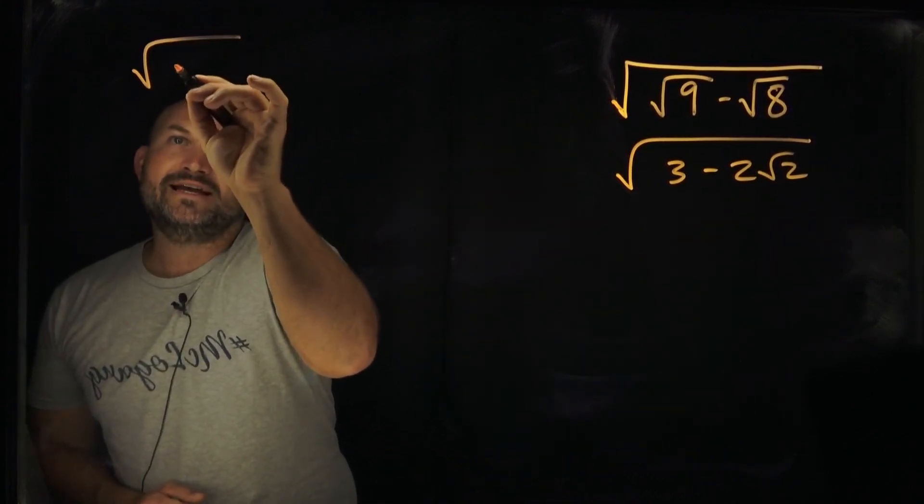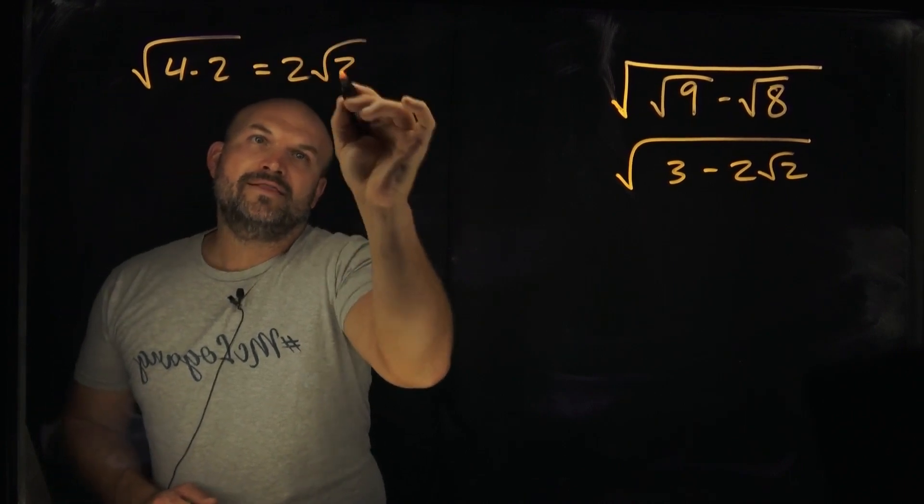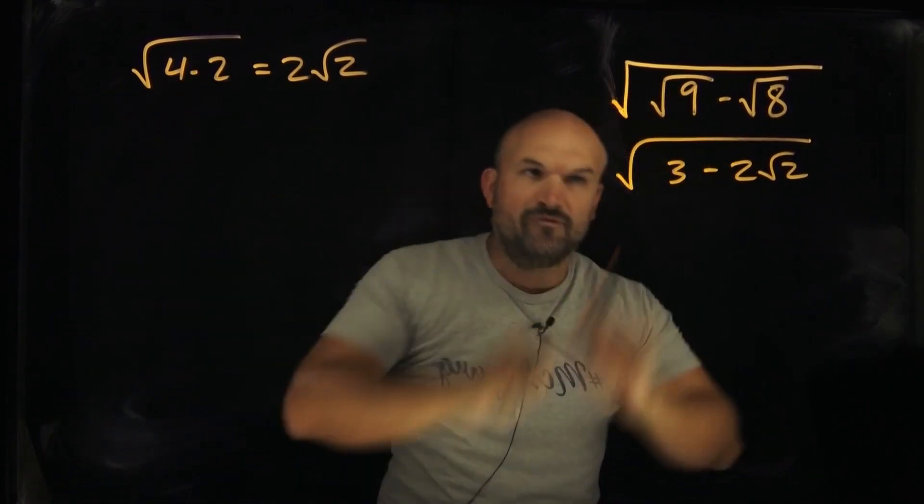Because again, just remember, square root of 8 can be written as 4 times 2, square root of 2 here is just going to be a 2, and then radical 2. We can simplify that square root, and we can simplify 9.